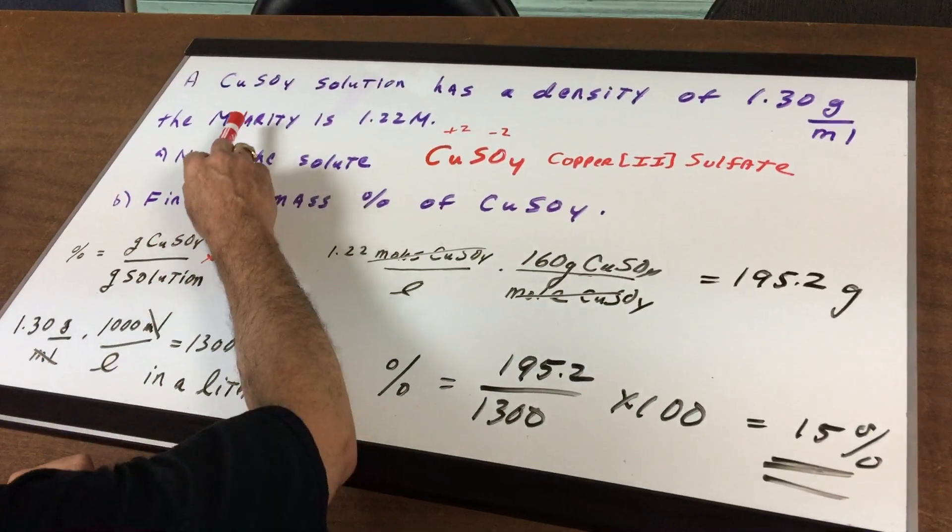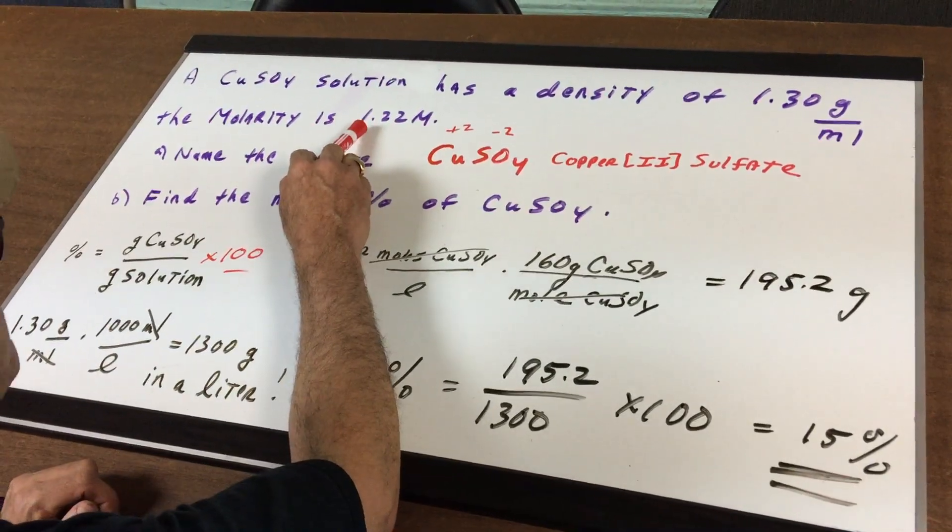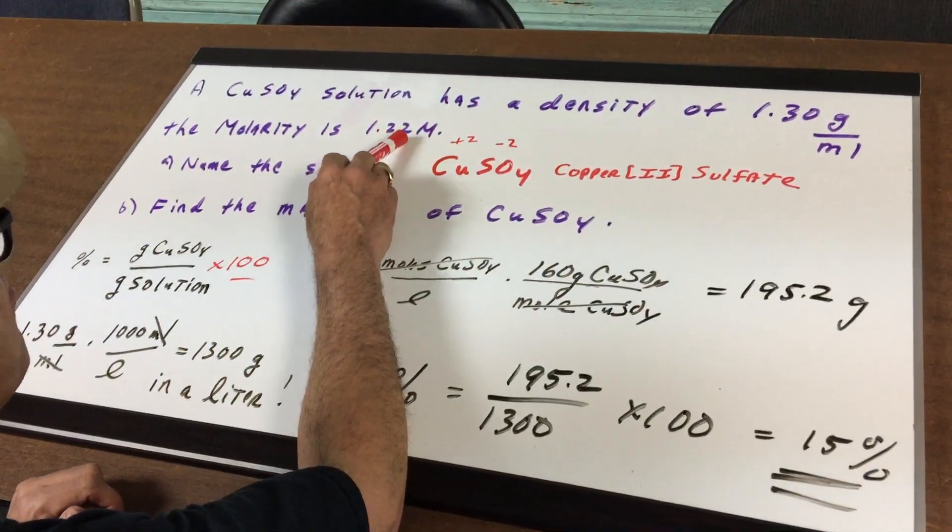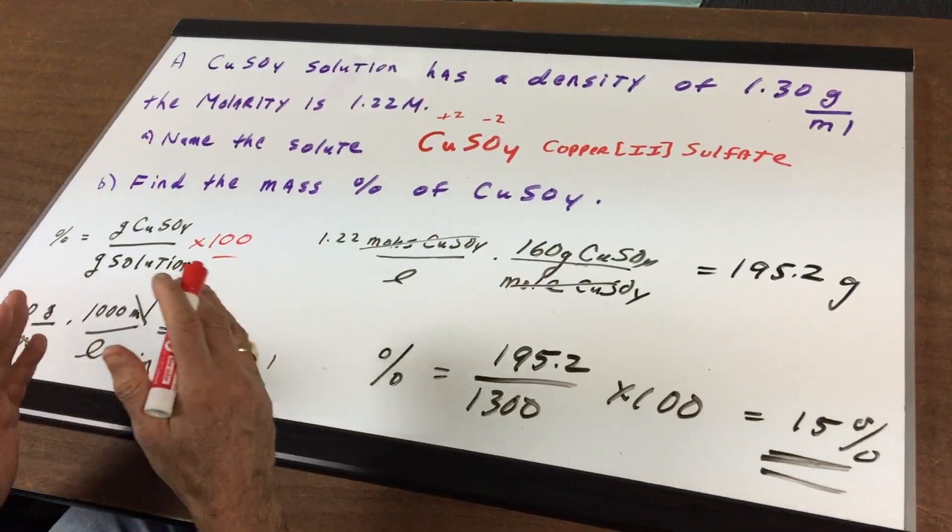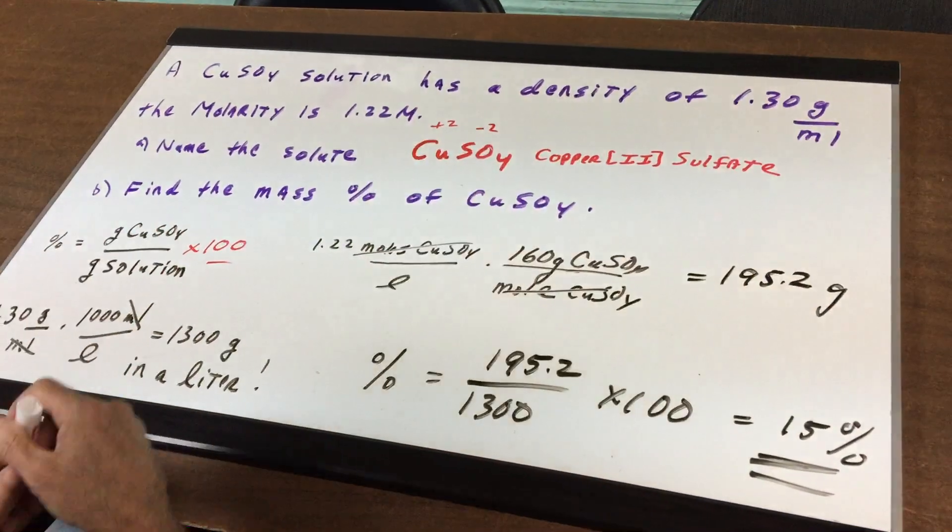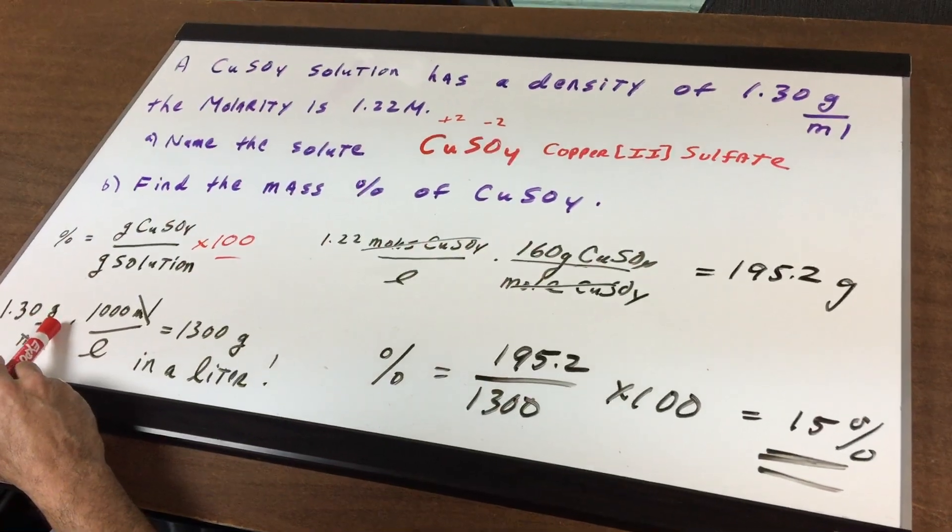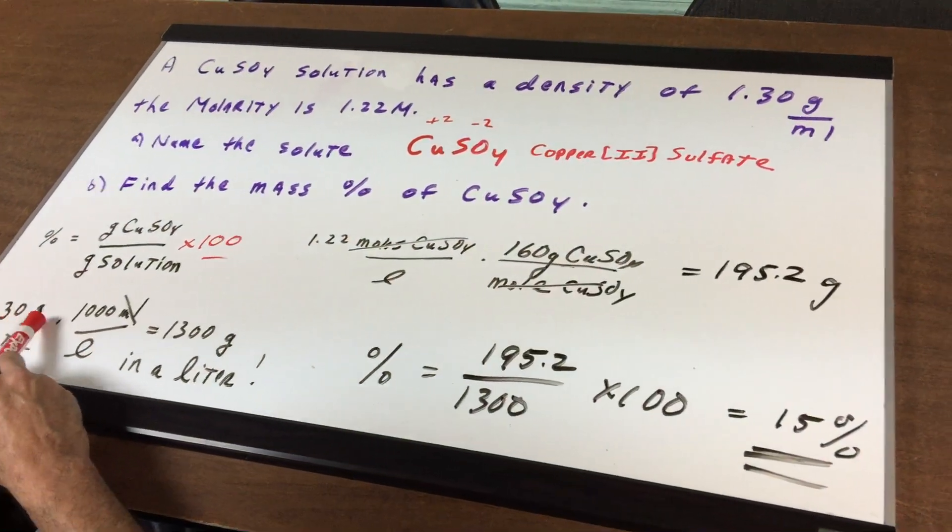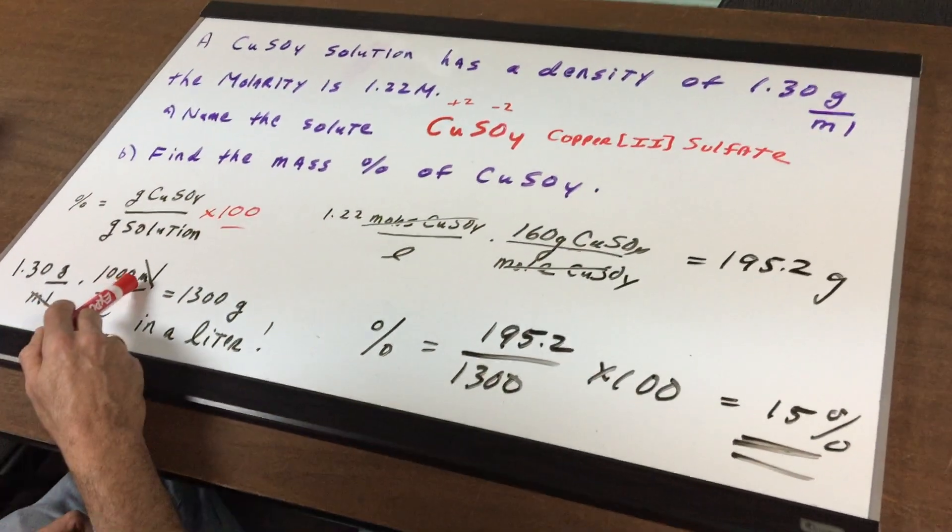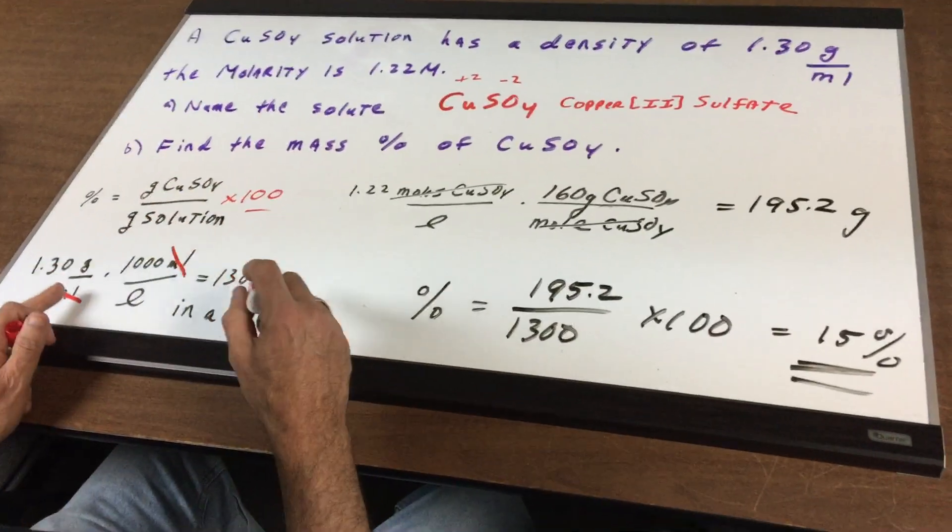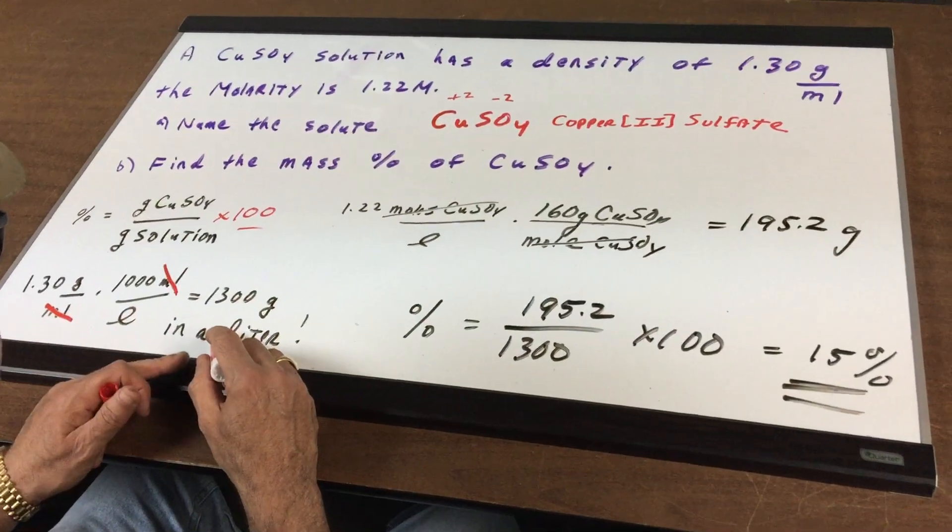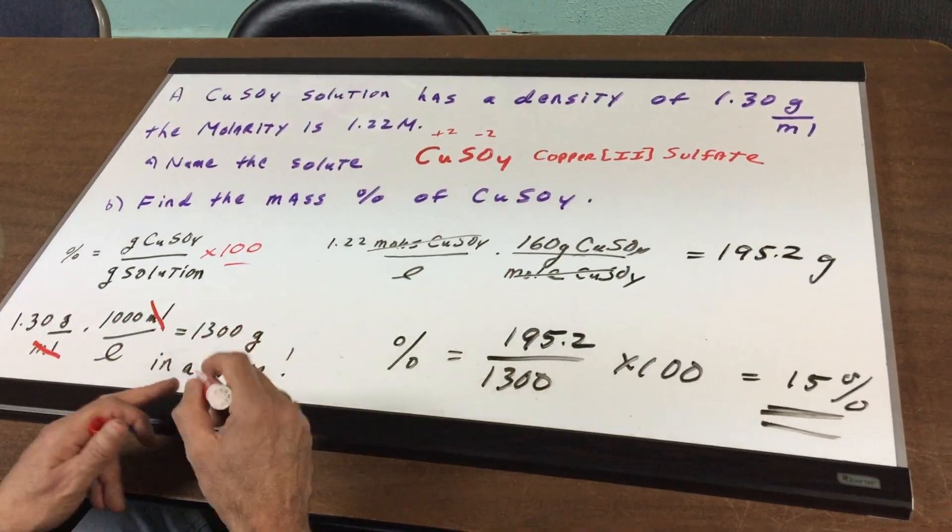Now the first thing is we know the molarity of the solution is 1.22 molar, or moles per liter. Everything is based on moles per liter. They gave you the density. If you multiply 1.30 grams per milliliter by a thousand milliliters per liter, you cross out the milliliters and you're left with the number of grams of the solution in one liter.